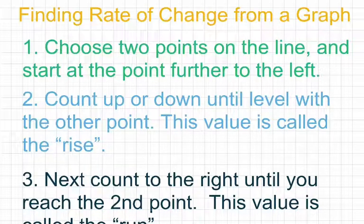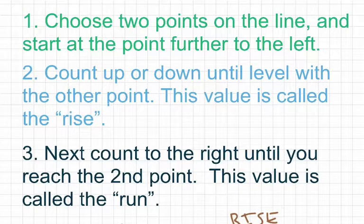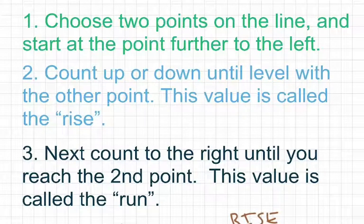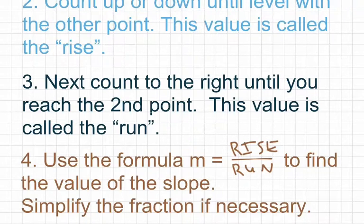Count up or down until you are level with the other point. This value is called the rise. Our third step is to count to the right until you reach that second point. This value is called the run. We're going to use the formula m equals rise over run to find the value of the slope. We mathematicians use m to represent slope or rate of change. Slope and rate of change are two terms we can use interchangeably — they're synonyms.